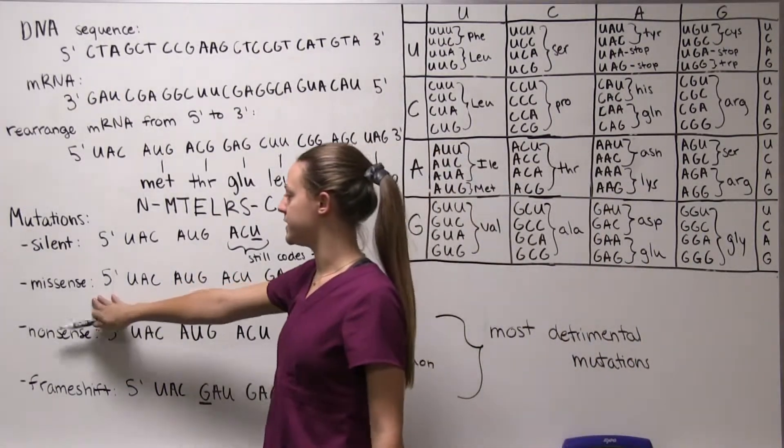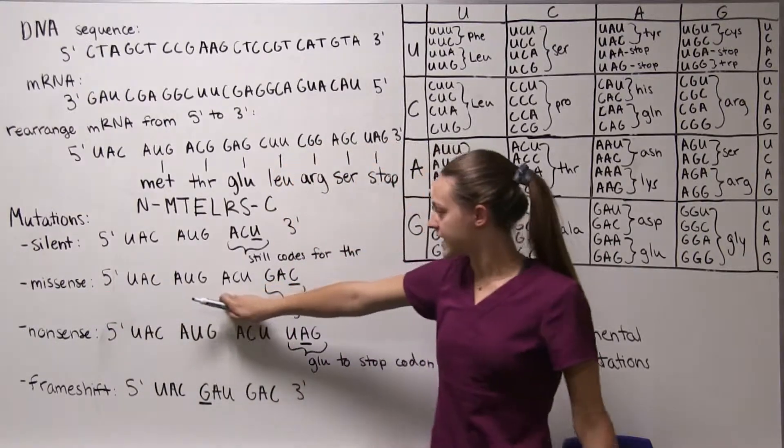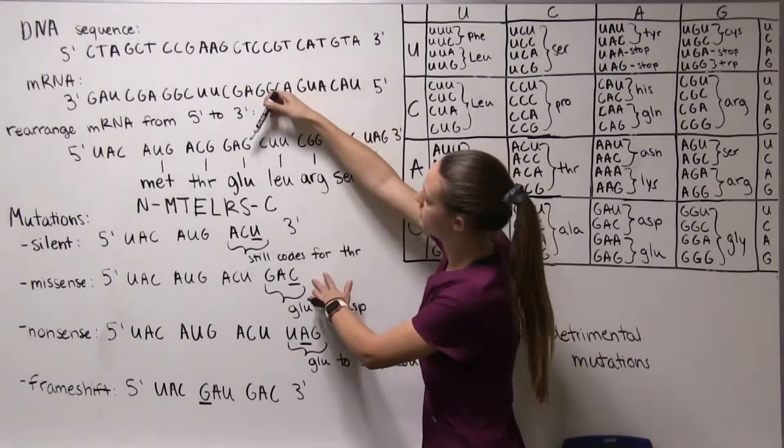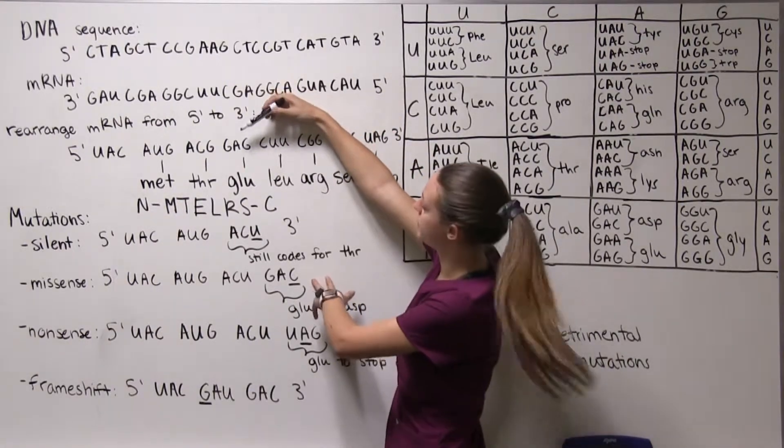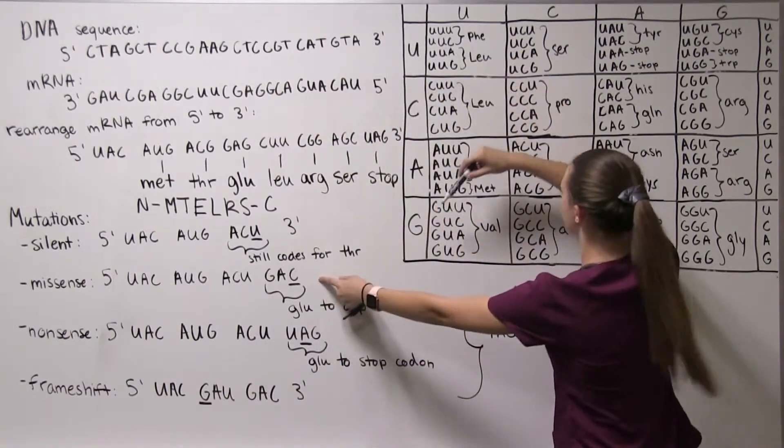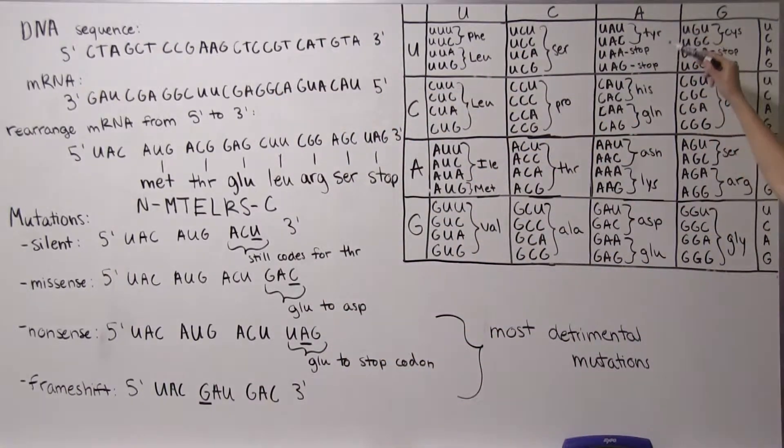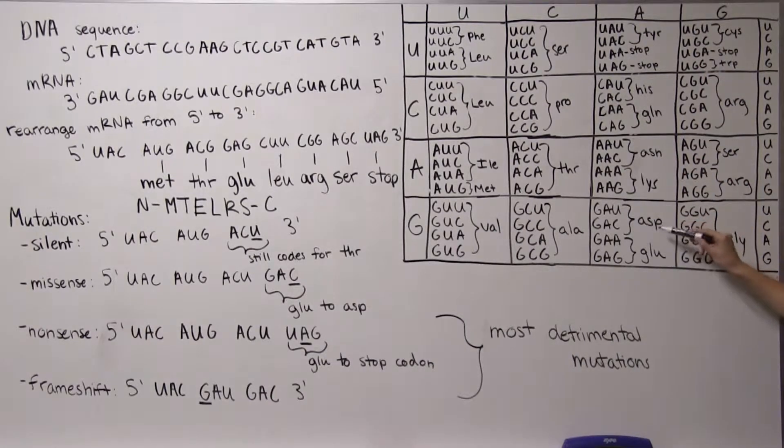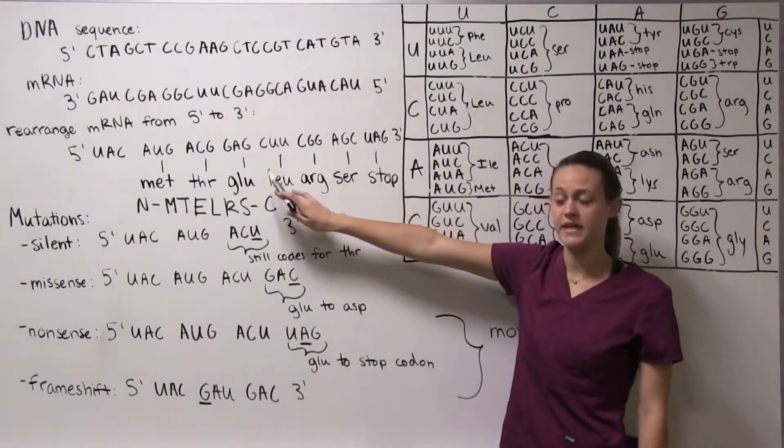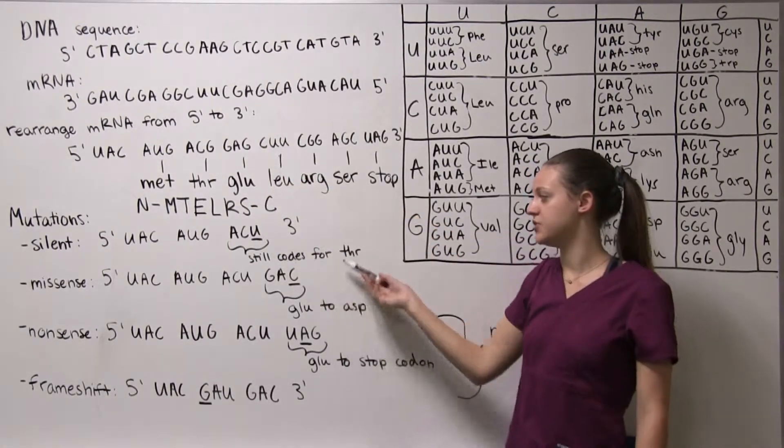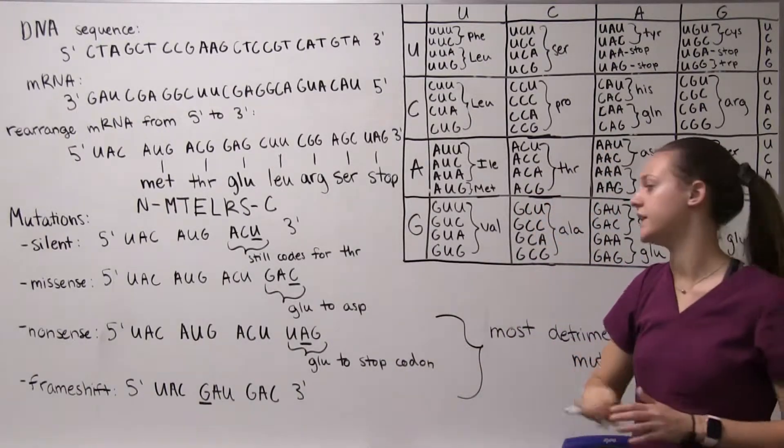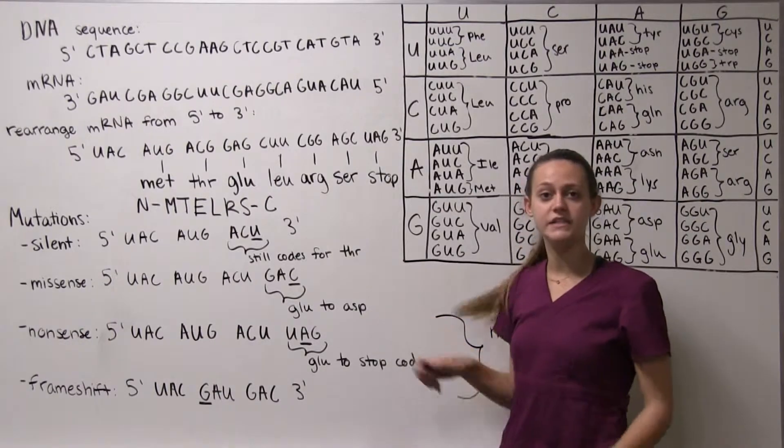Now we're moving on to our missense mutations. So here again the same sequence and then we get to GAC which matches up with GAG so this G was mutated to a C. Now when we go here we have GA and then C, now we have an aspartate. Originally we had a glutamate with our GAG, when it was mutated to GAC now we have aspartate. So that is a missense mutation when only one peptide is changed.